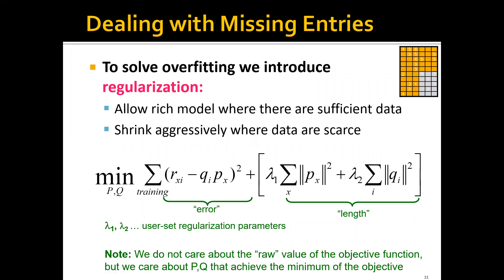To solve overfitting, we introduce regularization. This regularization will allow a rich model where there are sufficient data, and it will automatically shrink aggressively when the data are scarce. To introduce this regularization, besides the original error term, we add two additional regularization terms. We call these the length terms. The lambda_1 and lambda_2 are what we call hyperparameters — these are user-set regularization parameters.